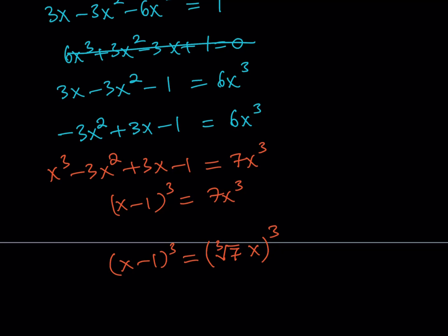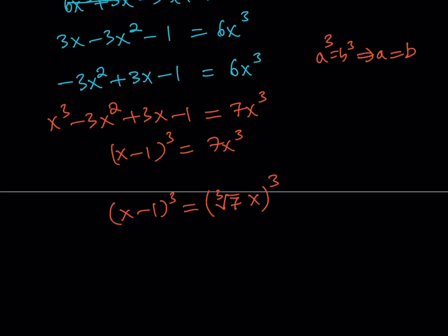Well, if a cubed equals b cubed, what is that supposed to mean? If a cubed equals b cubed, that implies, always implies, a equals b. There's no other way because 3 is an odd number. They both have to have the same sign, so on and so forth. So this implies that x minus 1 is equal to the cube root of 7 multiplied by x. Great.